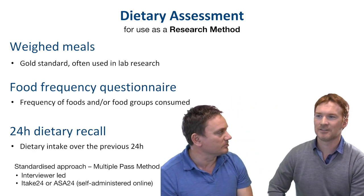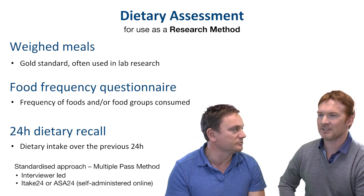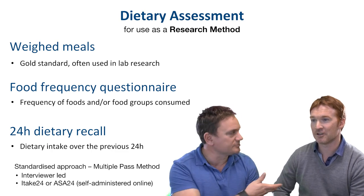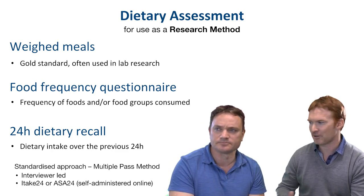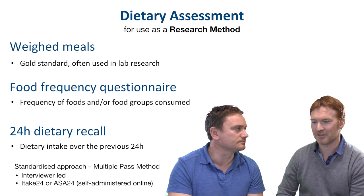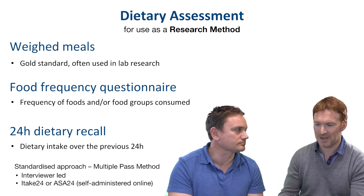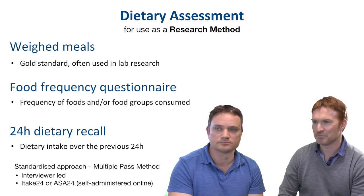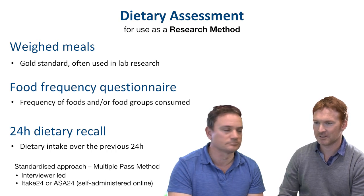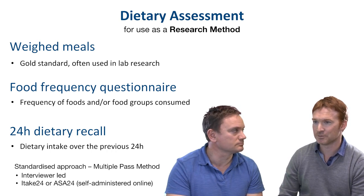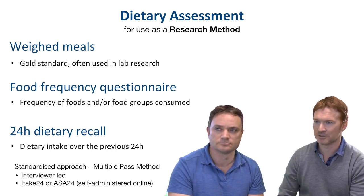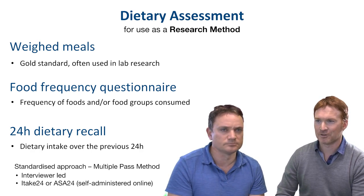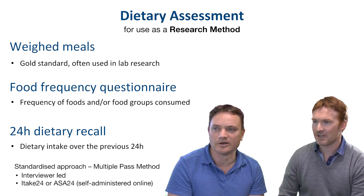The next methods are more research-focused and too difficult to use in practice. Weighed meals are the complete gold standard — you weigh everything, hand the weighed meal to the participant, and know exactly what they consumed. This is great for lab research where everything is controlled and you're changing just one variable, but obviously not practical in the real world.